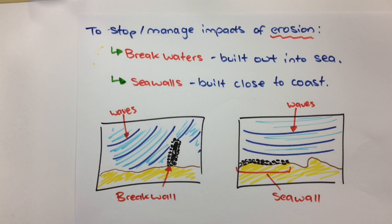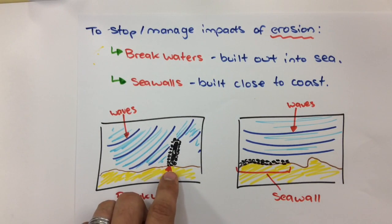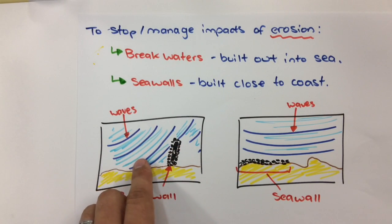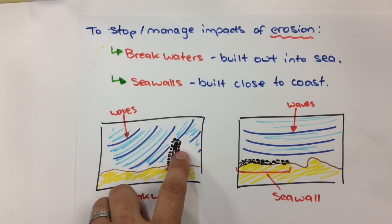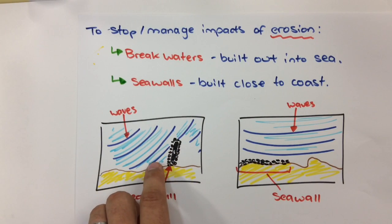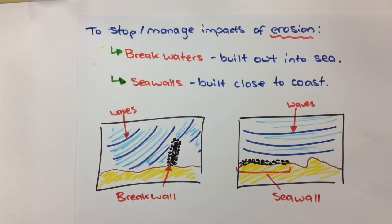There are two main types of management strategies for erosional forces: break walls and sea walls. The difference is that a break wall goes out into the sea, whereas a sea wall is built close to the coast. The break wall interrupts the pattern of longshore drift, so you can see how waves moving across don't have much impact on the protected side — this side is protected from that erosional force of the waves.